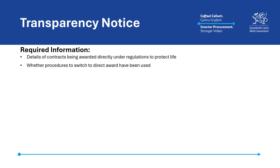Information on whether the contract is being awarded directly to a supplier that is not an excluded supplier by virtue of section 43 of the Act, which covers switching to a direct award, as well as the reason the contracting authority considers that there were no suitable tenders or requests to participate, and why it considers that an award under competitive tendering procedures covered in section 19 of the Act is not possible in the circumstances.